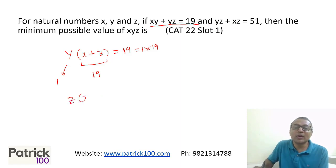That means 19 is a multiplication of two values. They're natural numbers. It only possible 19 is 1 into 19, which means the only possible way is that Y is one and X plus Z becomes 19. That's the only possible way. So I got a value of Y. Now let's look at the second. In the second equation, I can take Z common. If I take Z common, you get X plus Y 51.